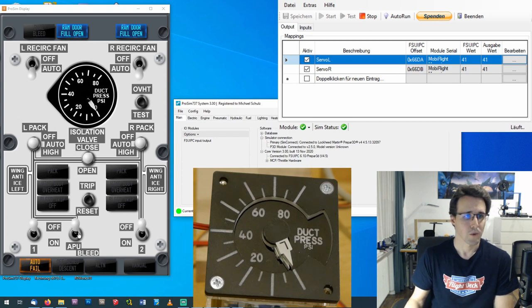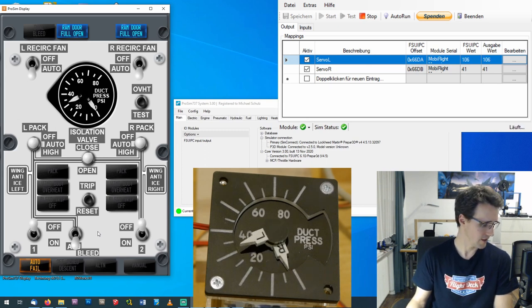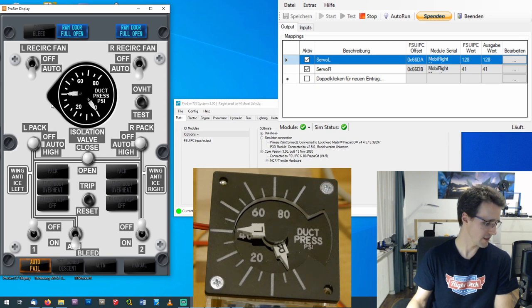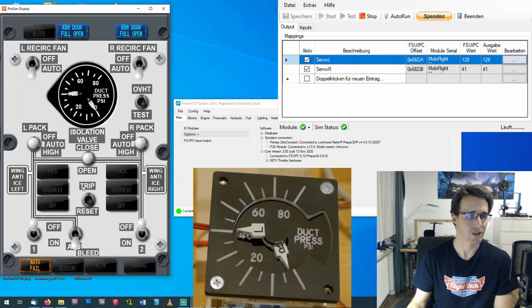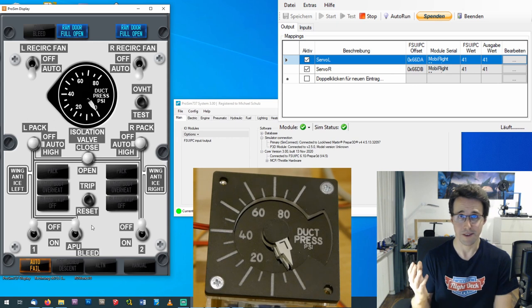And when I switch the APU bleed on, then we should see a movement on the left needle. There it is. And the software goes up to 40. And so is the needle here on my real gauge. And when I switch this off again, then the needle should go back. Everything is working.